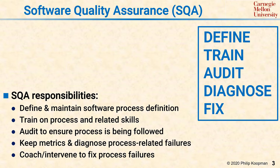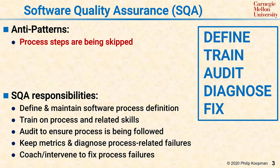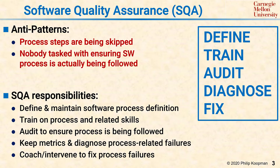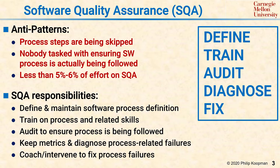The anti-patterns for good SQA include allowing process steps to be skipped — SQA is in charge of making sure all the process steps are followed as defined. Another anti-pattern is having nobody tasked with ensuring the process is being followed. While it sounds nice to say everyone has a shared responsibility, if there's no one actually tasked with making sure that's happening, eventually it won't happen. A very commonly seen anti-pattern is spending less than 5% or 6% of the total project effort on SQA — that's about what it takes to staff SQA properly.